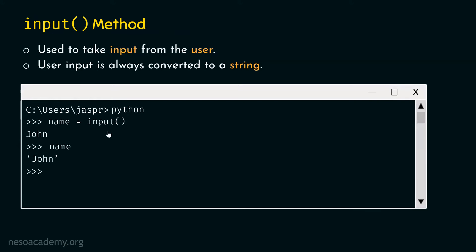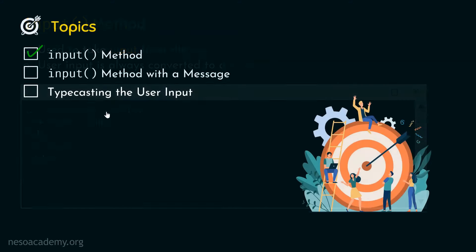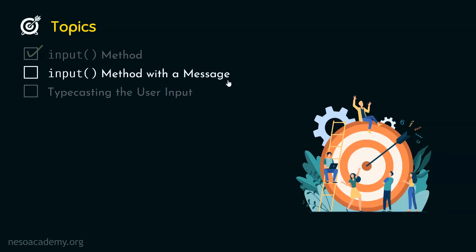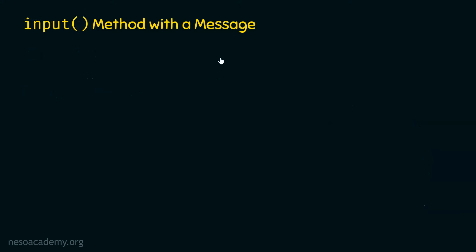Now let's move on to the next topic: input method with a message. Sometimes it is important to specify what kind of input we want from the user. Without providing a message, users will have no idea what type of input we expect from them. So it is sometimes mandatory to provide a message as an argument to the input method. The syntax allows us to provide some message as an argument to input.